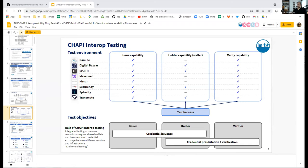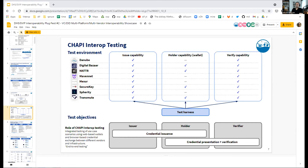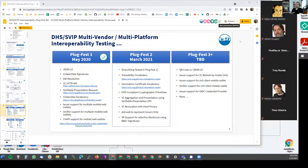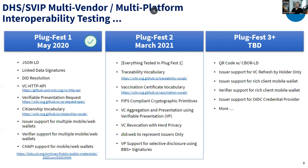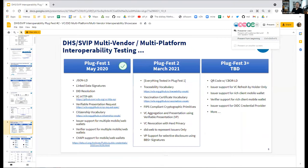I was very surprised that even though we did not have selective disclosure with BBS+ signatures as a formal interop target, at least four companies implemented it. At least one company from our supply chain digital credential cohort — Transmute — implemented it completely out of the blue. Nice work, Ori. SecureKey also implemented that capability, as well as Mattr.